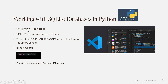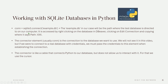SQLite3 comes integrated in Python. To use it in Visual Studio Code we must first import the library with: import sqlite3. To create the database or connect if it already exists, use: con = sqlite3.connect('example.db'). The 'example.db' in our case will be the path where the test database is located on our computer. It is accessed by right-clicking on the database in DBeaver, clicking on 'Edit Connection', and copying what is shown in the path field.